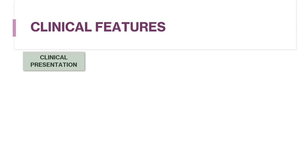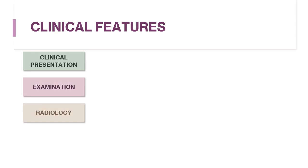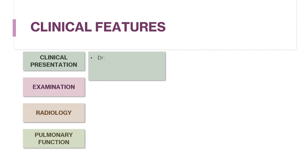First, let's look at the clinical features. The common features include the clinical presentation, findings on examination, radiology, and pulmonary function tests. Starting with clinical presentation: all of these diseases present with a cough that is typically dry and distressing. The next common feature is breathlessness, with an onset that is often insidious but thereafter relentlessly progressive.